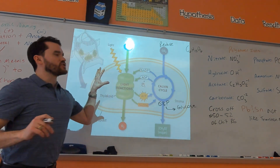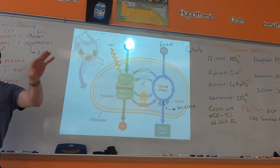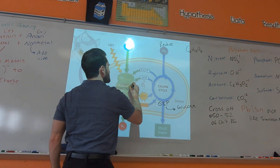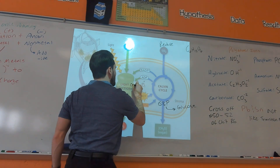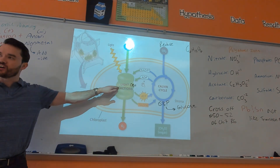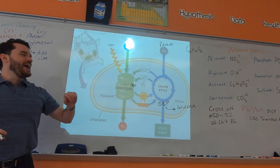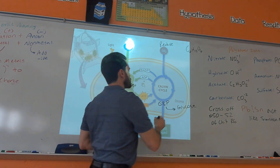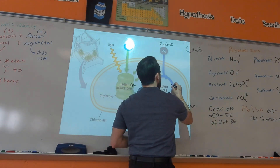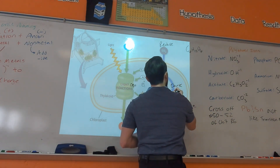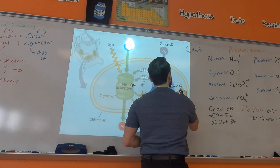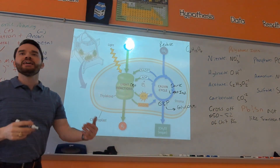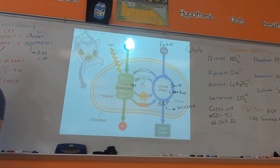There are two different reactions here. First, there are the light reactions — sometimes called the light-dependent reactions, because they depend on light. Then there's the Calvin cycle, also called the dark reactions or light-independent reactions, because they can happen independent of light.